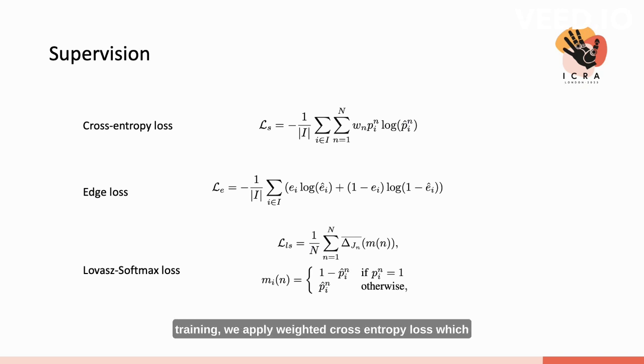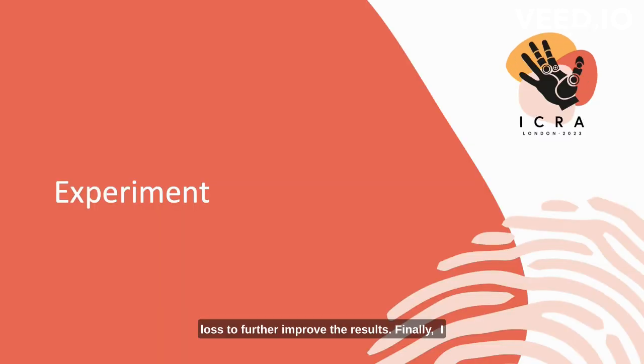During training, we apply weighted cross-entropy loss, which is readily adopted in semantic segmentation tasks. To ensure accurate results near the boundary, we also apply edge loss to try to make the network aware of the location of boundaries. At the same time, we apply Lovász softmax loss to further improve the results.